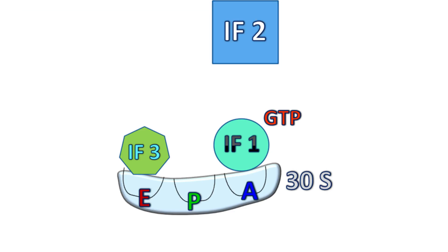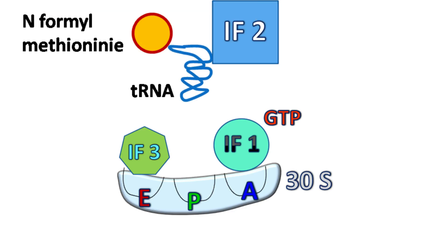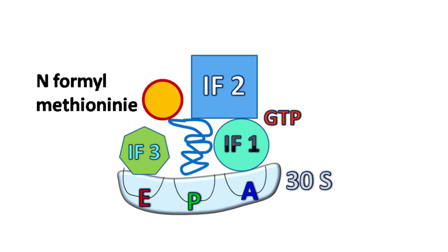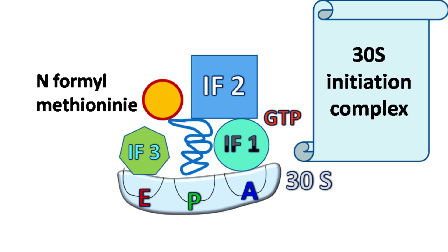Next, initiation factor IF2 along with charged N-formylmethionine tRNA binds to the P side. This structure so formed is known as 30s initiation complex.